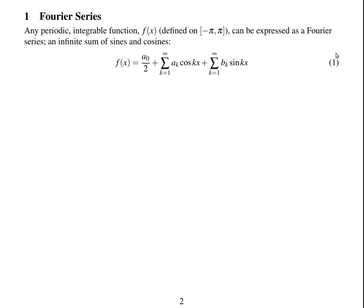Any periodic integrable function f, which is defined on minus pi to pi — but it can be rescaled, so it's defined on any interval — can be expressed as a Fourier series. That's a Fourier series as an infinite sum of sines and cosines, where all these sines and cosines have different wavelengths from different k's.